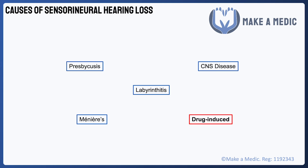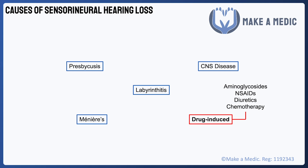It's important to remember that some medications can cause sensorineural hearing loss by damaging structures in the inner ear. These medications include aminoglycoside antibiotics like gentamicin, NSAIDs, diuretics, and chemotherapy agents such as cisplatin.